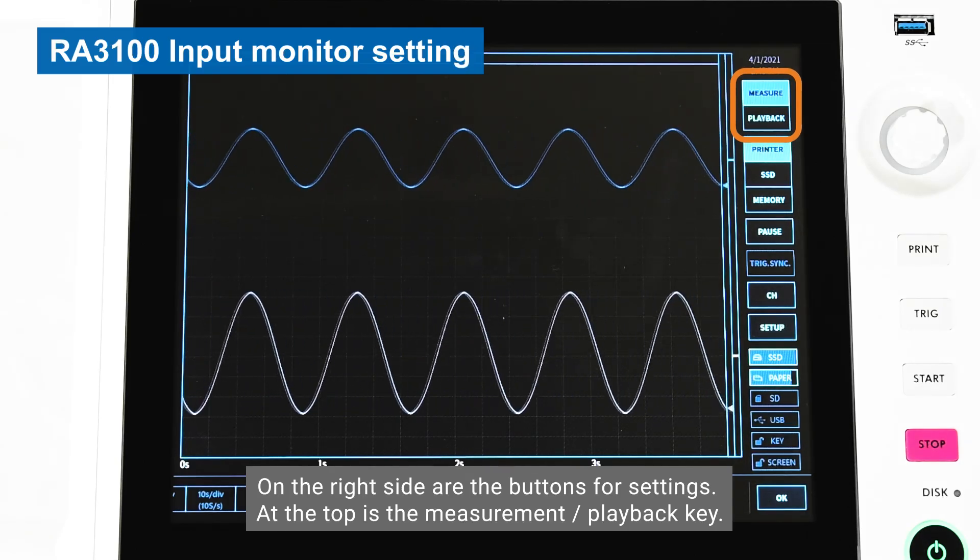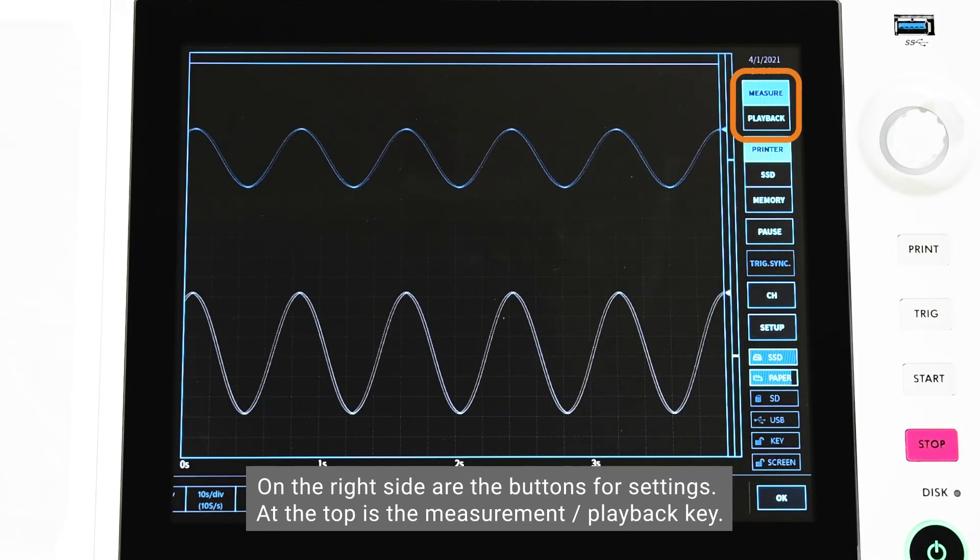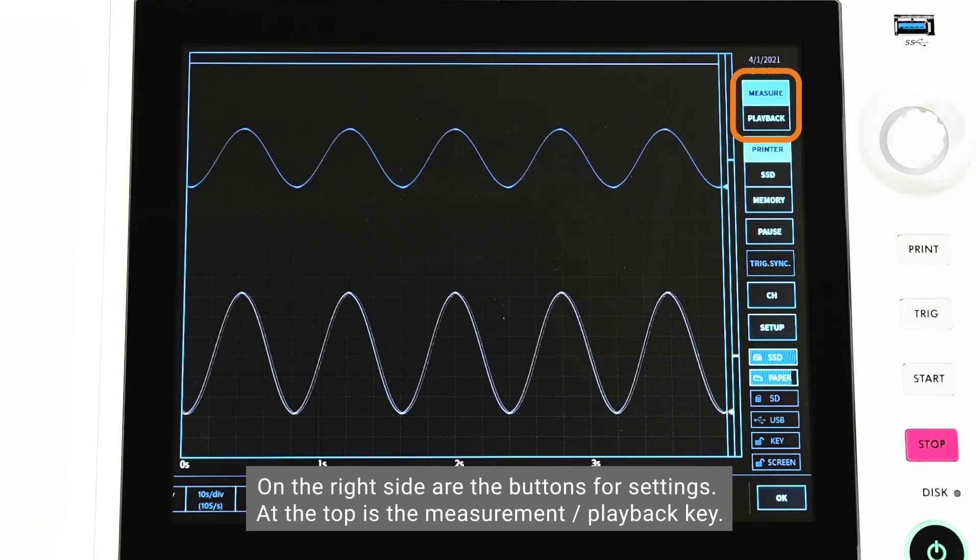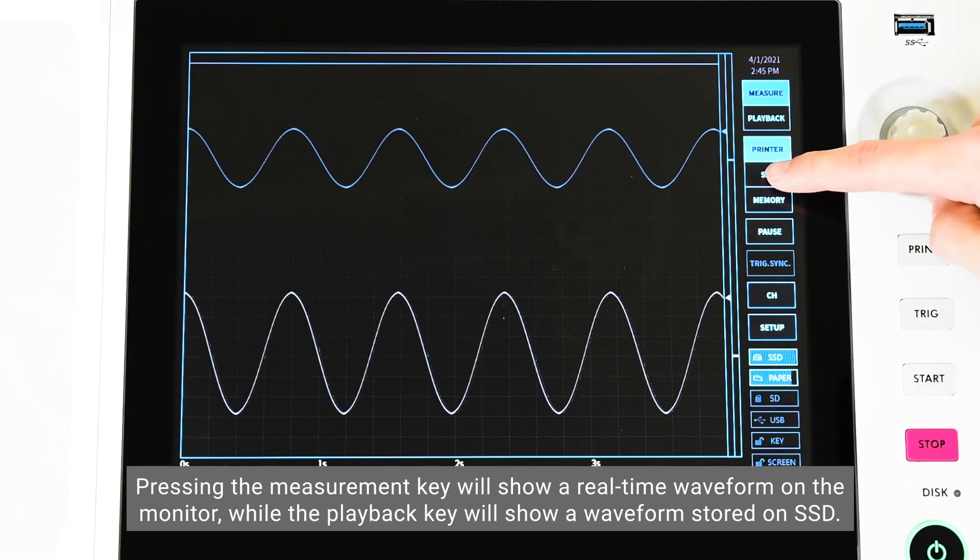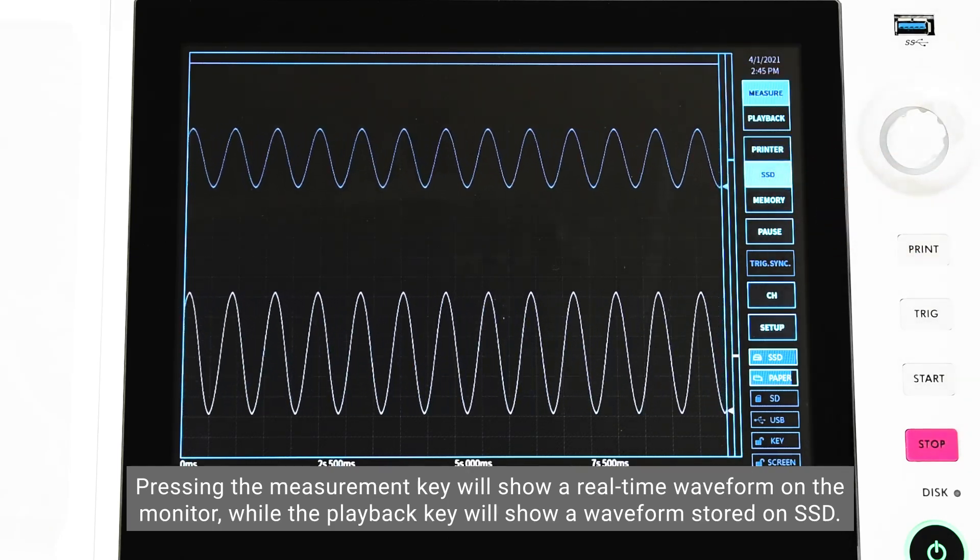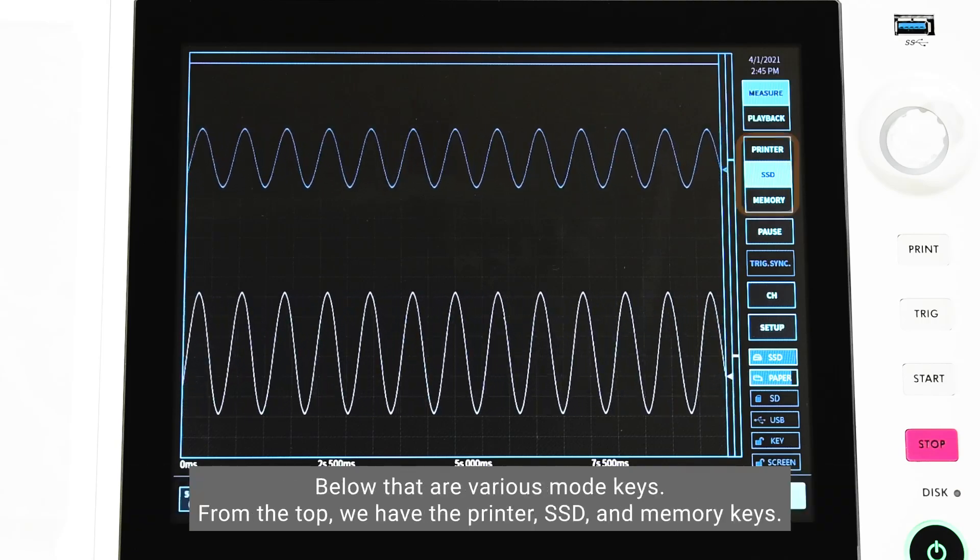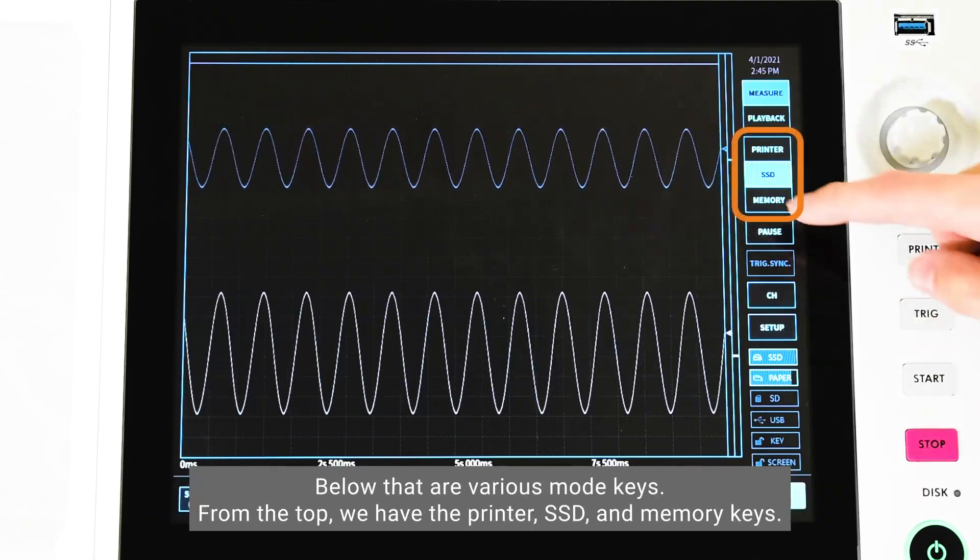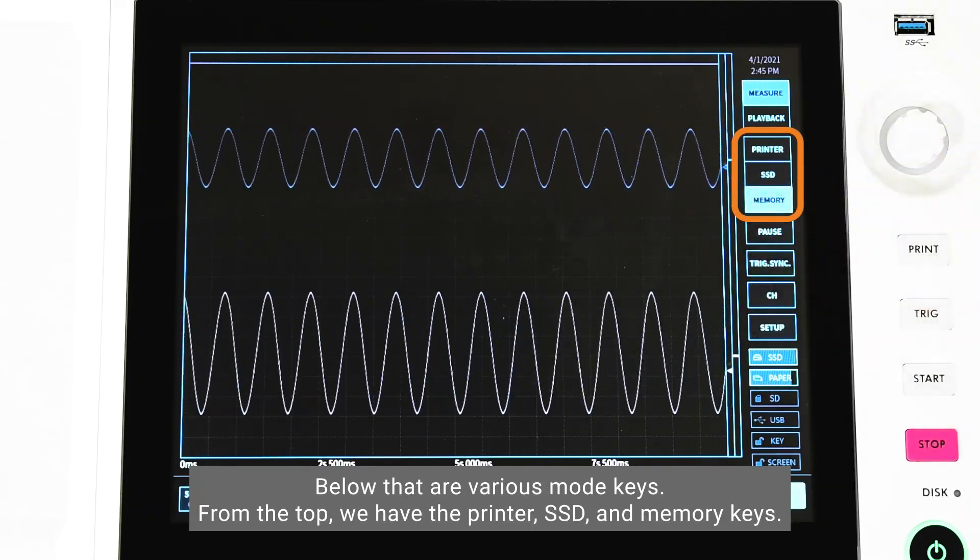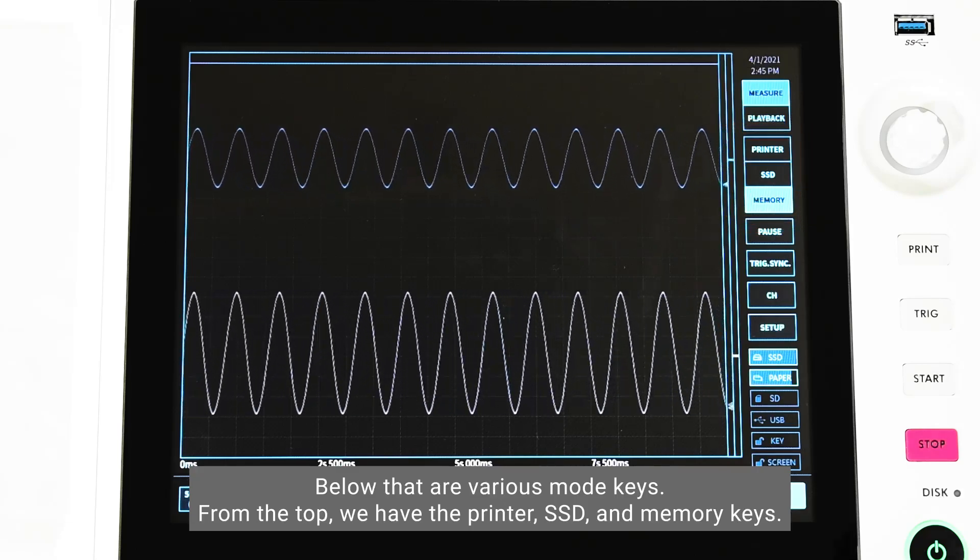On the right side are the buttons for settings. At the top is the measurement/playback key. Pressing the measurement key will show a real-time waveform on the monitor, while the playback key will show a waveform stored on SSD. Below that are various mode keys. From the top, we have the printer, SSD, and memory keys.